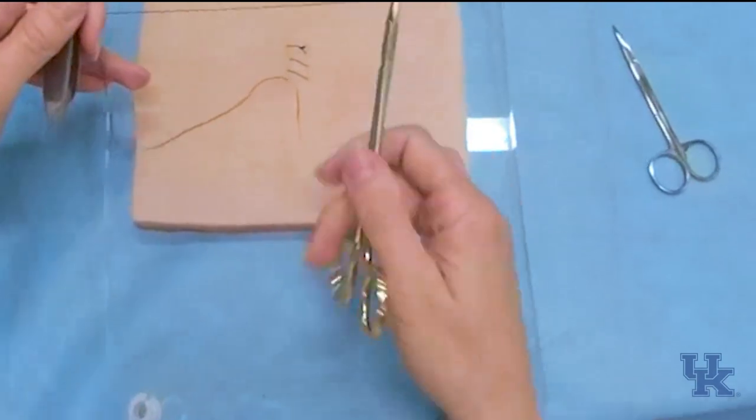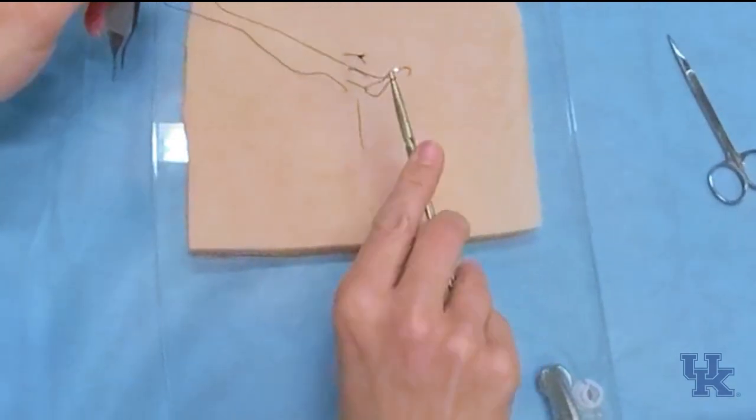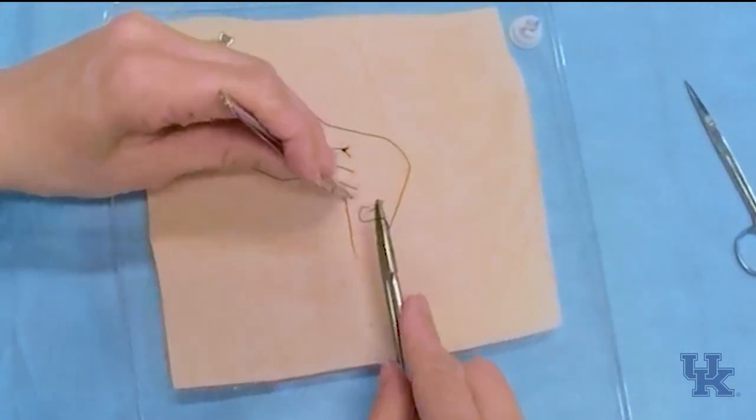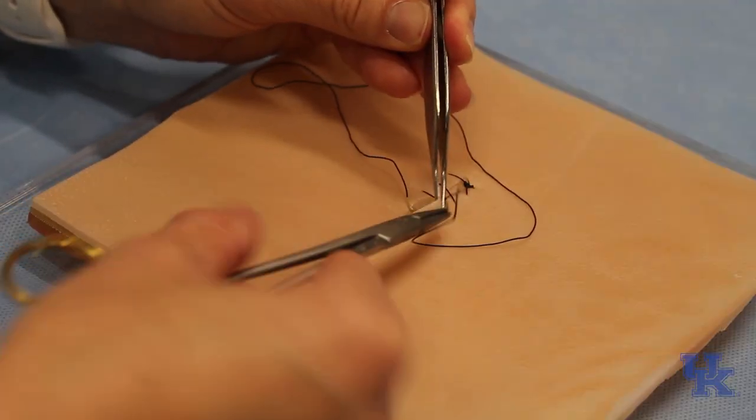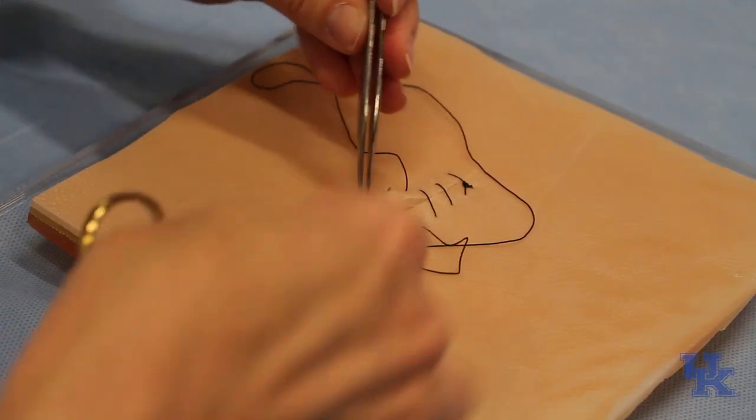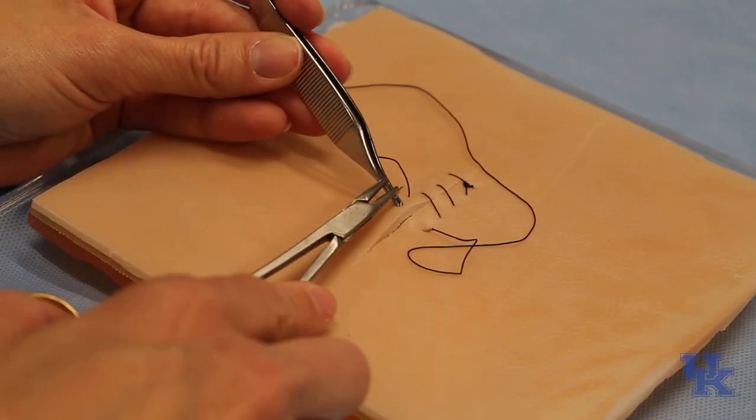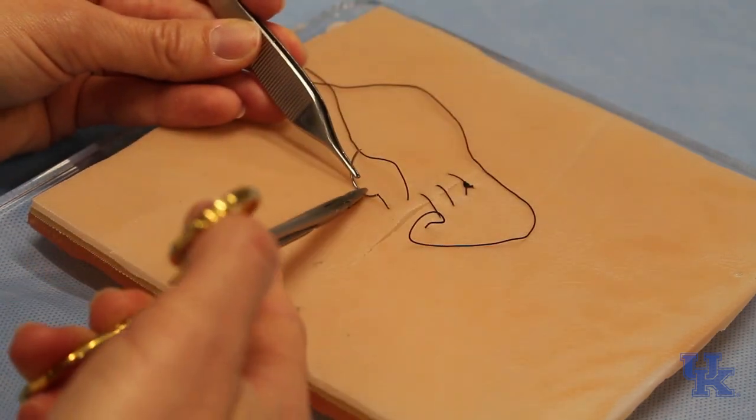So sometimes we'll re-grab the instrument a different way. Palmed is what we call it, which is when we do this to throw a stitch. It's a little bit easier to get that 90 degrees that we want in that manner, but then you need to rotate back to hold it in the correct way.